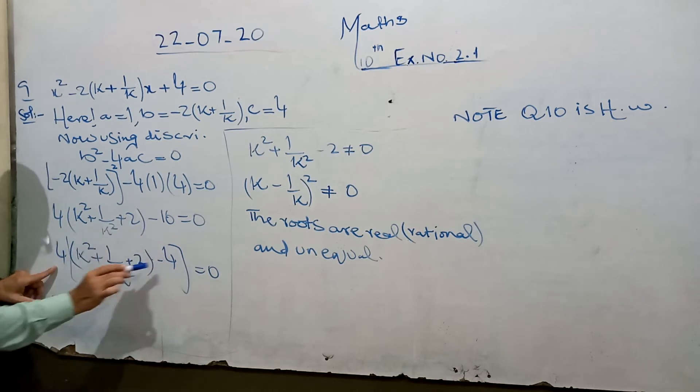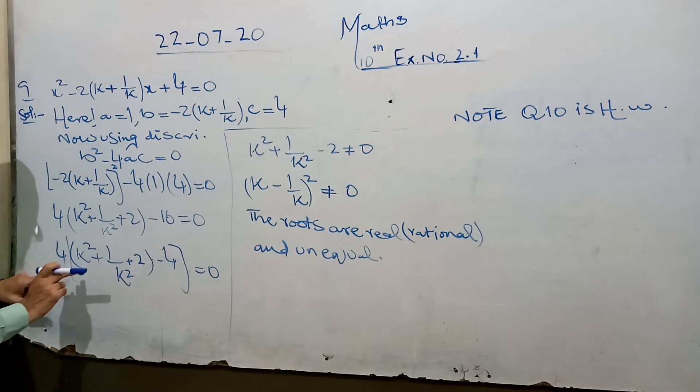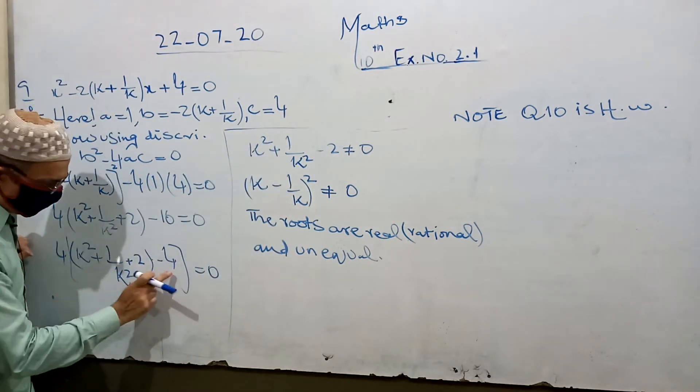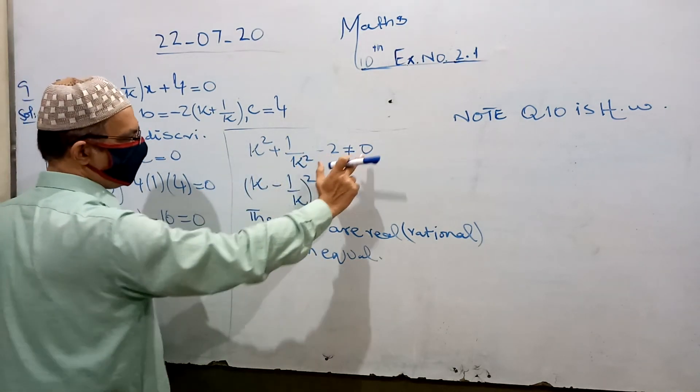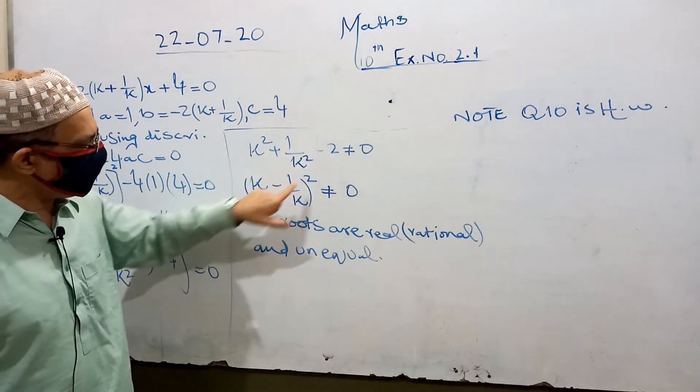From 16, we take 4 common. So 4[(k² + 1/k² + 2) - 4]. We solve this which is not equal to 0. Then k² + 1/k² - 2 equals (k - 1/k)² whole square.